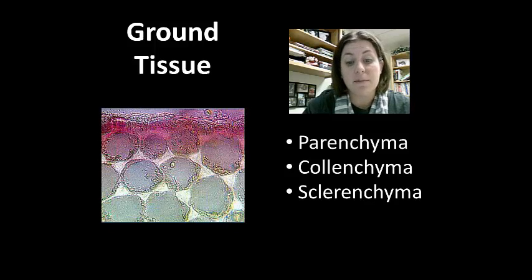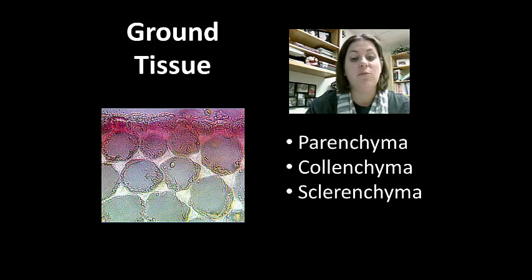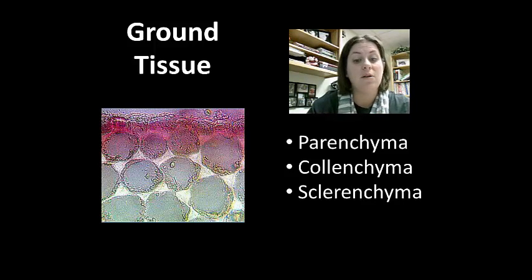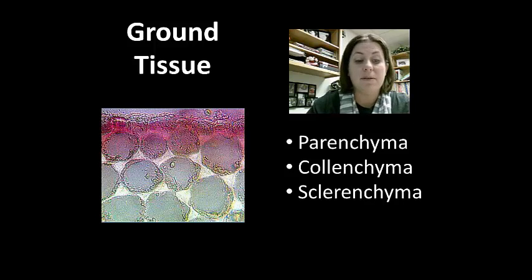Collenchyma cells have a thicker primary cell wall, providing more support for the plant. This is a flexible support found in non-woody plants. Think of celery — composed primarily of this type of cell — which kind of bends but gives a lot of structure.